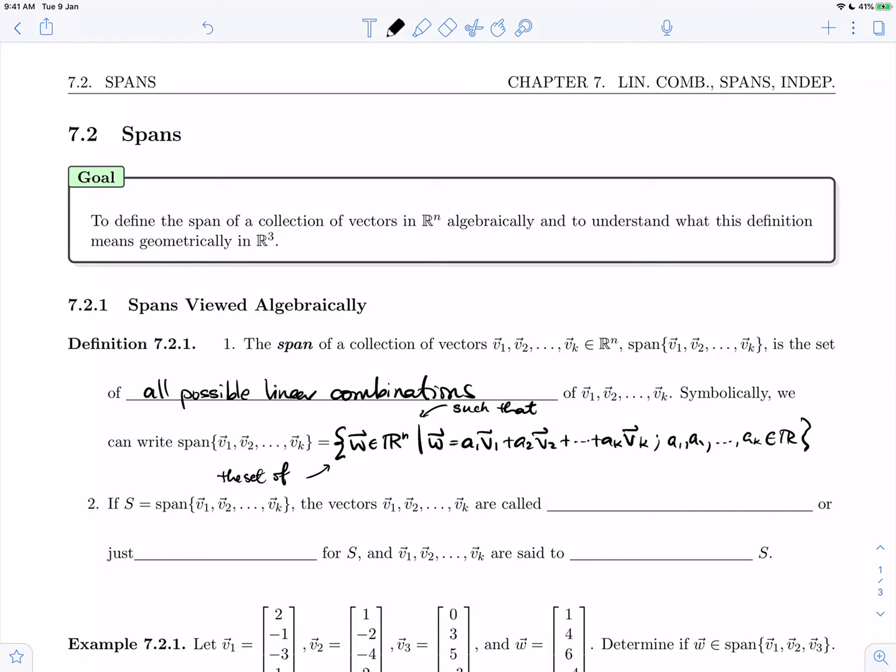The second part of the definition: if S is the span, then the vectors v1 through vk are called generating vectors, or just generators, for S. And the vectors are said to generate S.